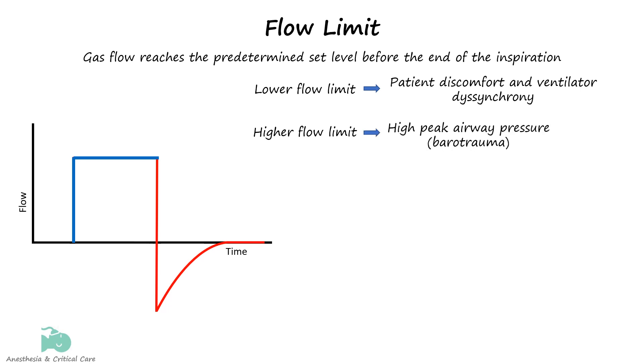For reference, the typical peak inspiratory flow rate of a calmly breathing person is 30 liters per minute, and it can increase to over 200 liters per minute in an athletic individual performing heavy exercise. Modern ventilators have a theoretical maximum flow limit of about 200 liters per minute. Typical inspiratory flow limit is set at about 60 to 120 liters per minute.